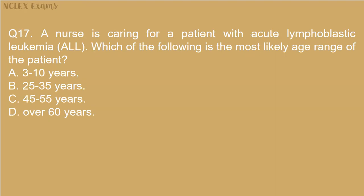Question 17: A nurse is caring for a patient with acute lymphoblastic leukemia (ALL). Which of the following is the most likely age range of the patient? A. 3 to 10 years. B. 25 to 35 years. C. 45 to 55 years. D. Over 60 years.